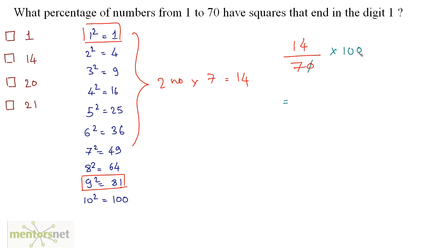The percentage is 14 upon 70 times 100. Since 7 times 2 is 14 and 2 times 10 is 20, this gives 20 percent. So 20% of the numbers from 1 to 70 have squares that end with digit 1, and the answer is option C.